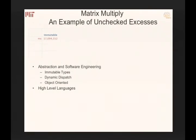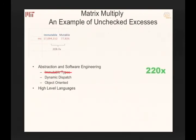I teach a software engineering course, and at some point I looked at what I was teaching and decided to test it. I took matrix multiply and applied all the great concepts — immutable types, dynamic dispatch, object-oriented programming. I ran a 2K×2K matrix and got a very slow result. Removing immutable types alone gave a 220x performance improvement.